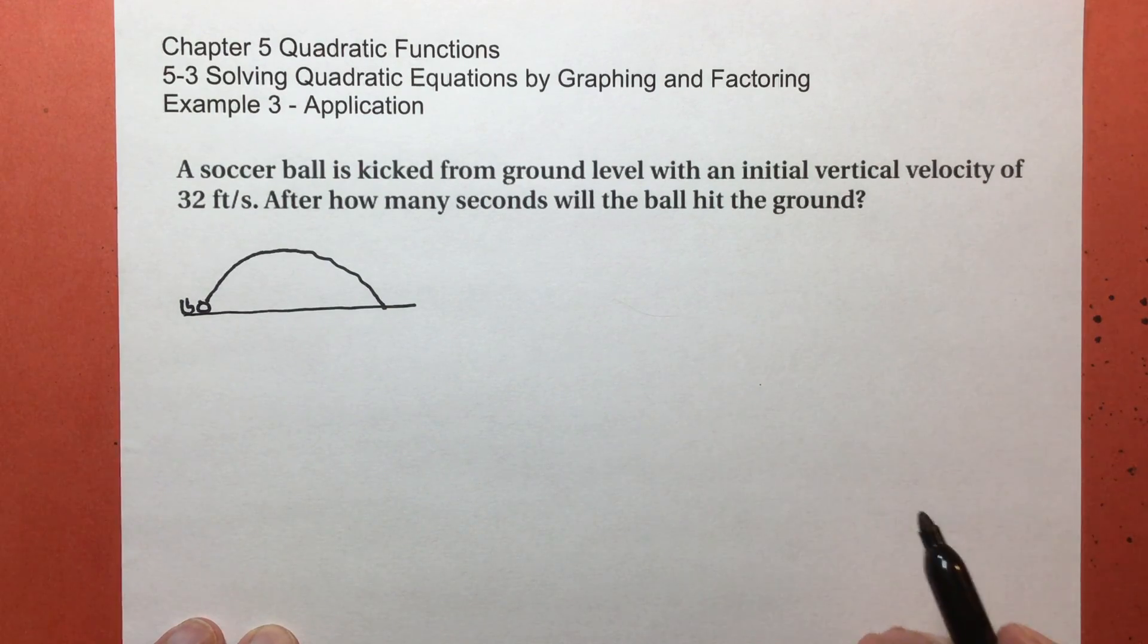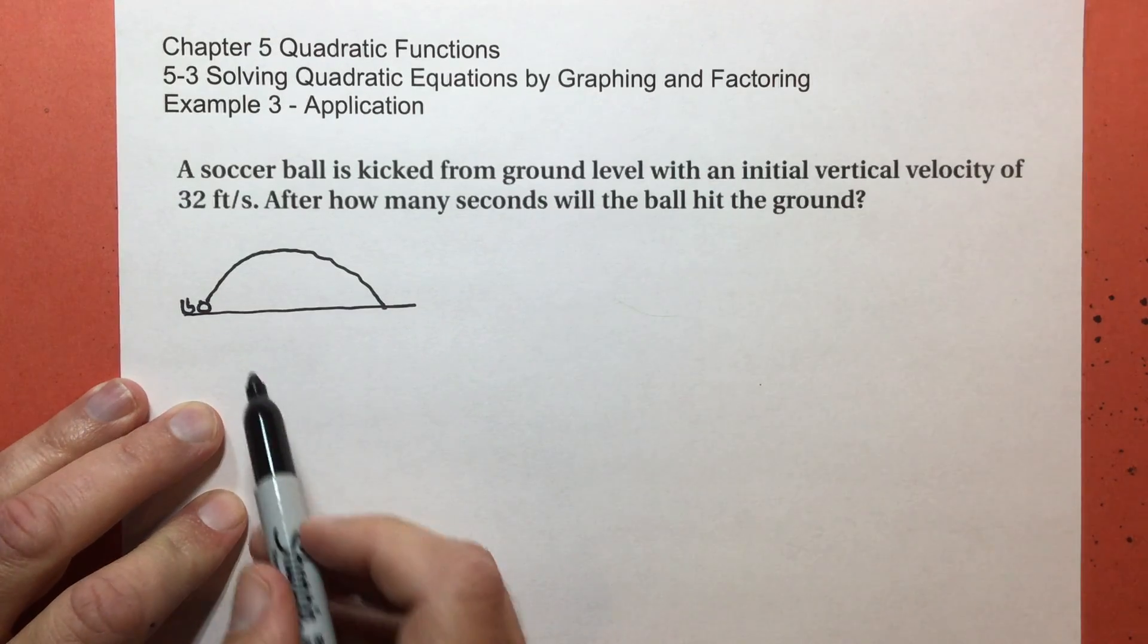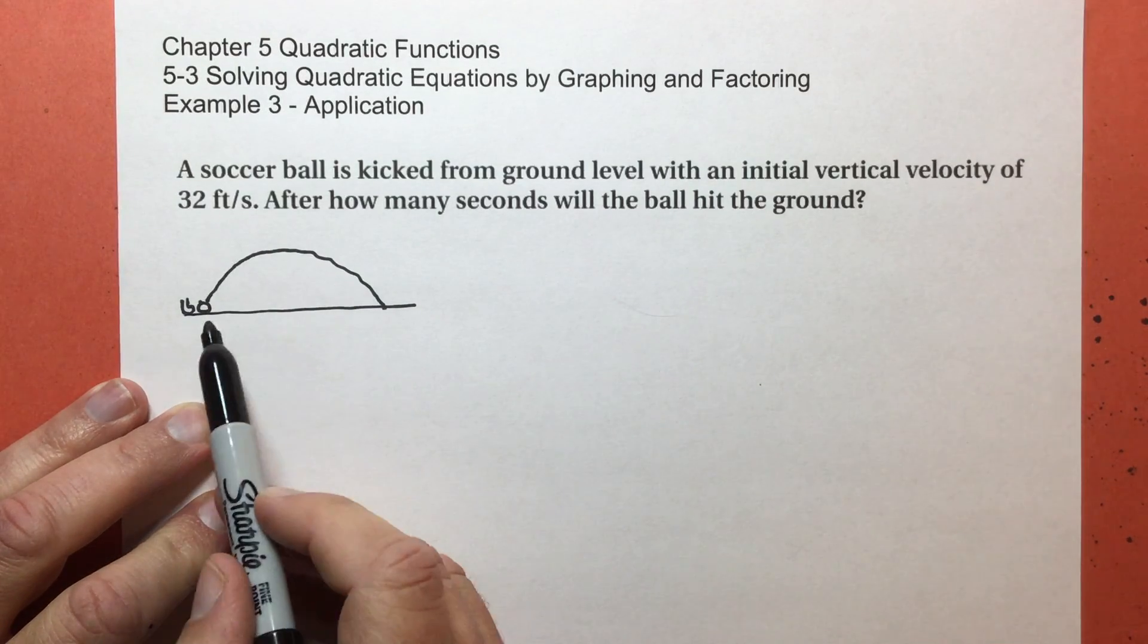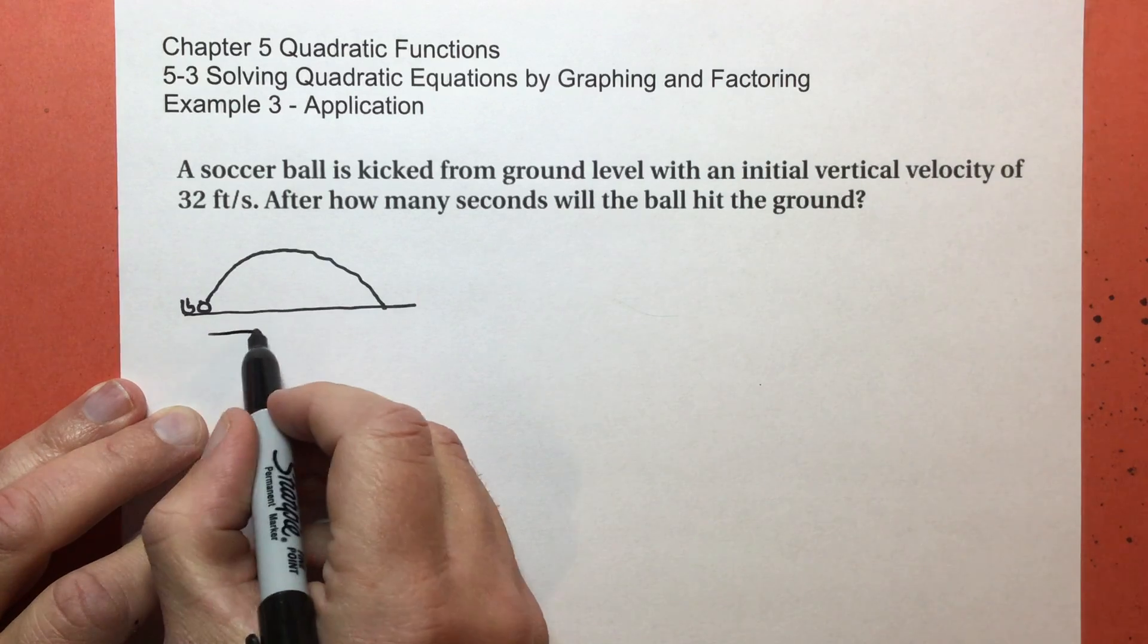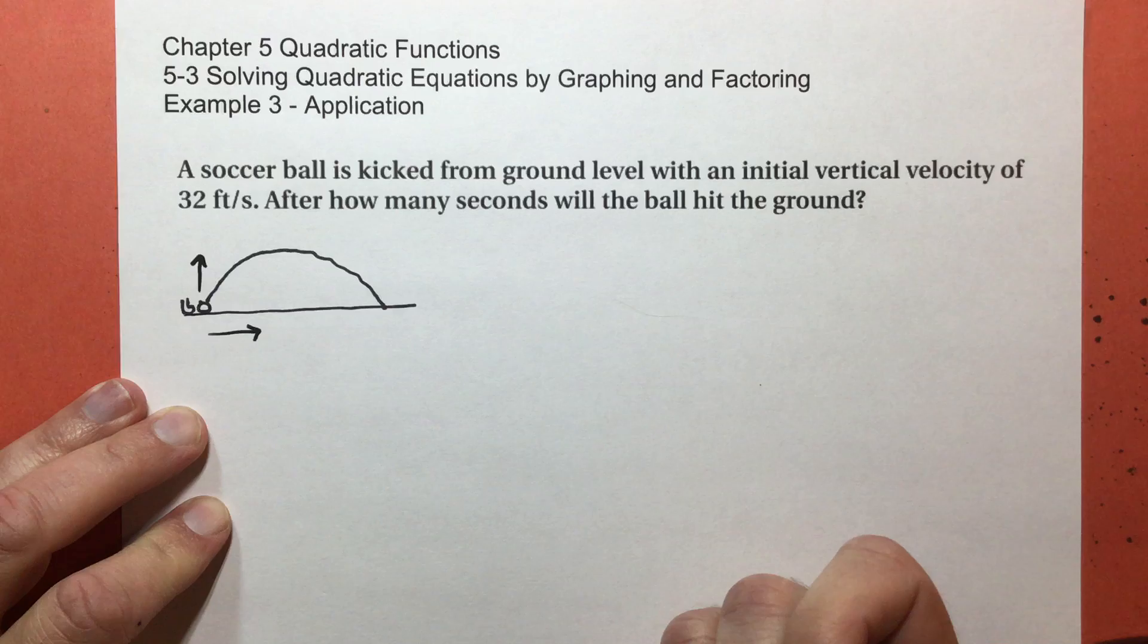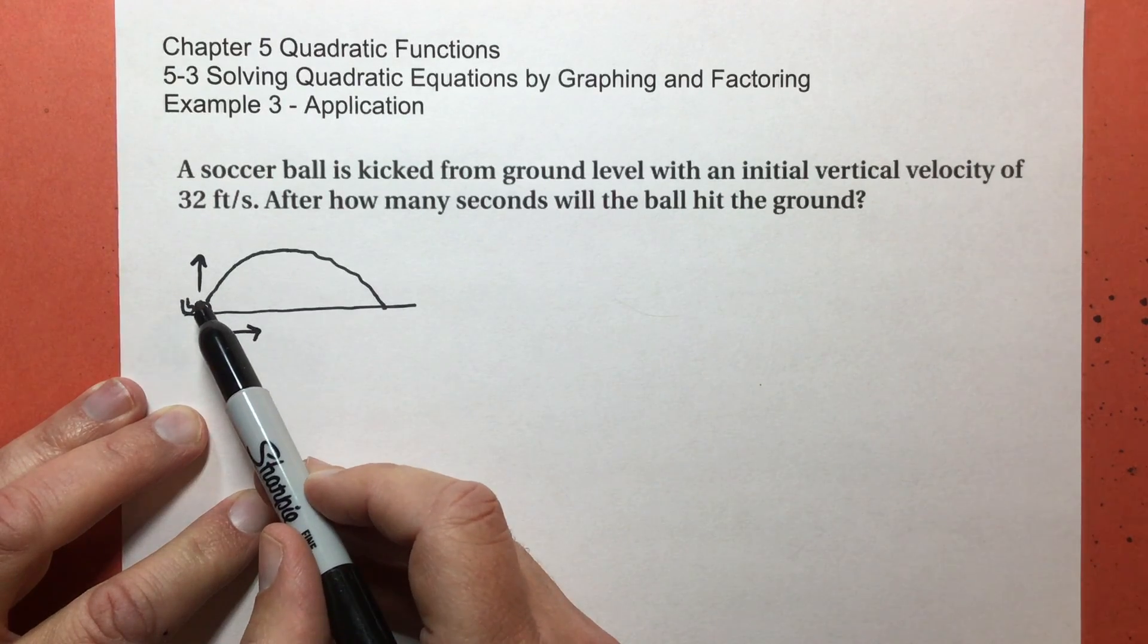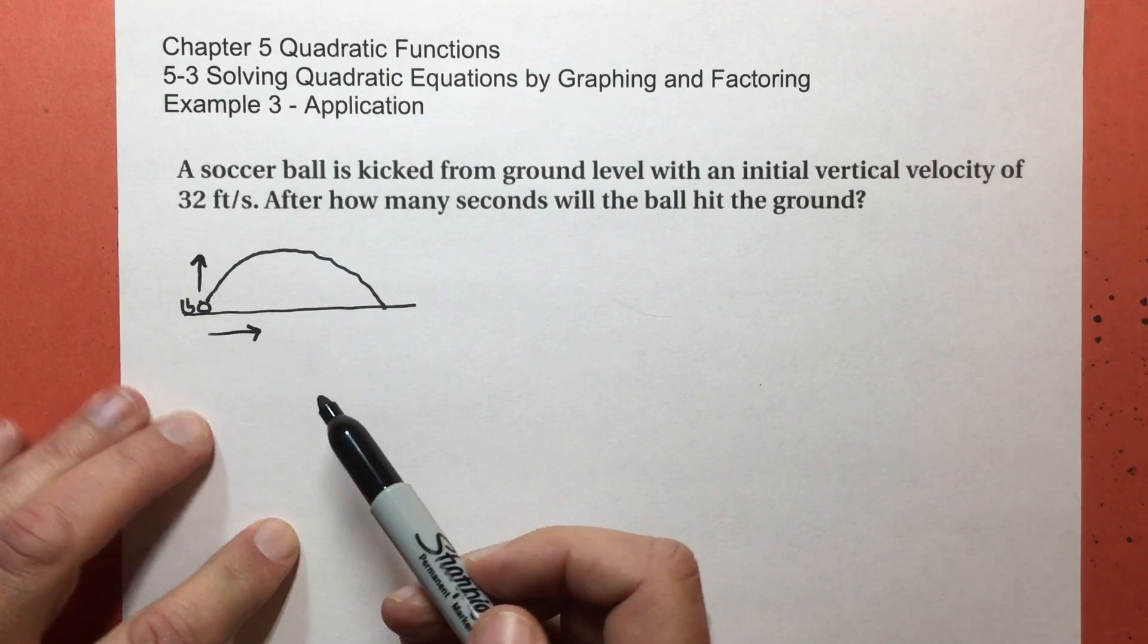When we talk about the initial vertical velocity, there's two parts that are happening here. This is following this path. It's going this direction, which is horizontal, but it's also going this direction, which is vertical. So this formula we're going to talk about is only dealing with the vertical part. Later, you'll learn about the horizontal stuff, too.